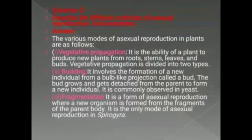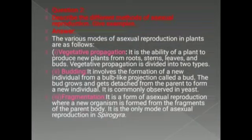Third is fragmentation. It is a form of asexual reproduction where a new organism is formed from the fragments of a parent body. It is the only mode of asexual reproduction in spirogyra, and here also I gave you an example of spirogyra.